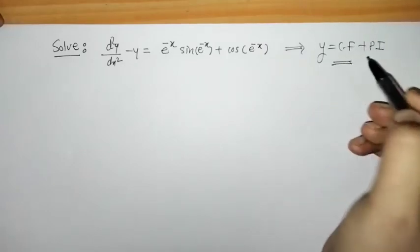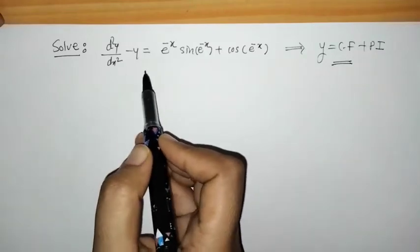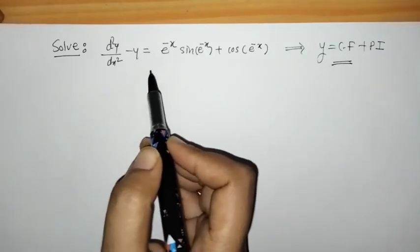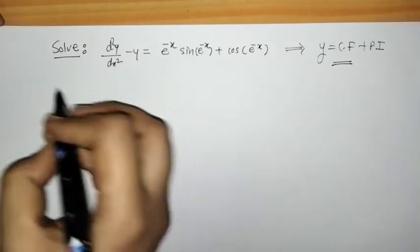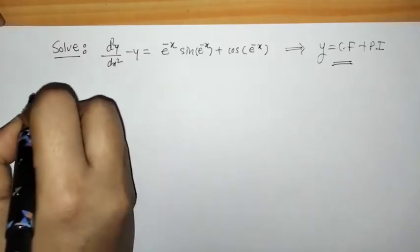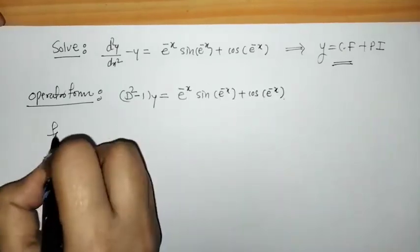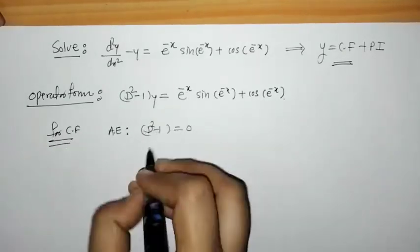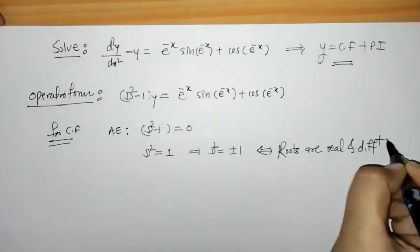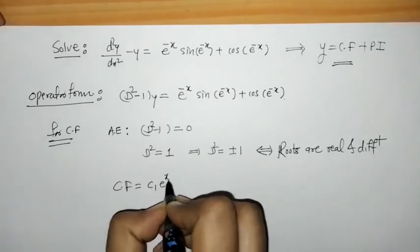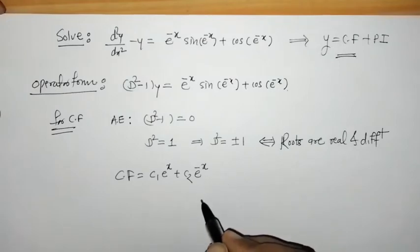First we have to find CF, so for this we have to write down the differential equation in operator form and proceed to find CF. Here we have found CF for the given differential equation.